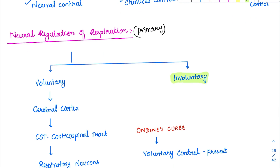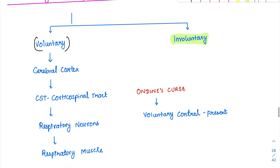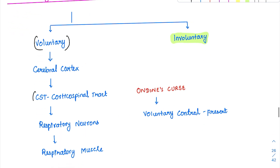Involuntary is the major mechanism, but we will finish voluntary first because it is smaller. Voluntary control comes from the cerebral cortex. The cerebral cortex, through its corticospinal tract — this tract is very important — gives impulses to the respiratory neurons, and finally they reach the respiratory muscles and do the voluntary control.